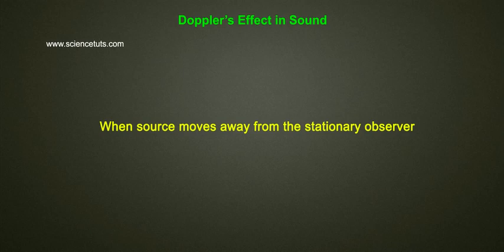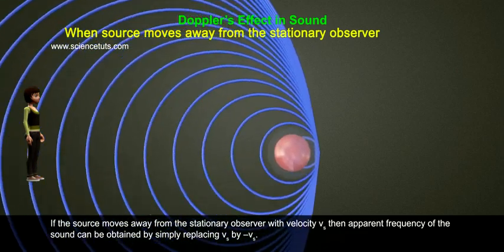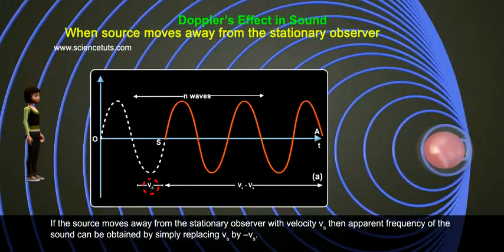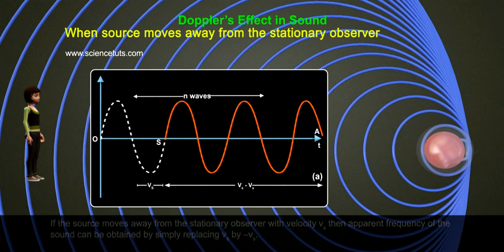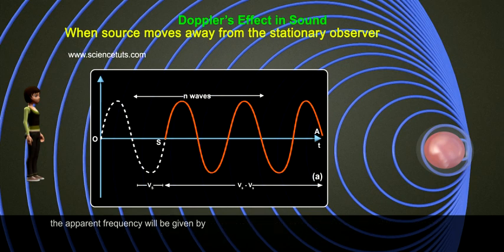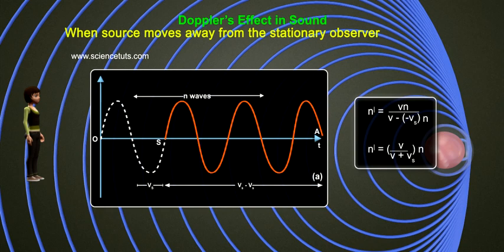When source moves away from stationary observer, if the source moves away from the stationary observer with velocity vs, then apparent frequency of the sound can be obtained by simply replacing vs by minus vs. The apparent frequency will be given by n' equals to vn by v minus into minus vs into n. n' equals to v by v plus vs into n.